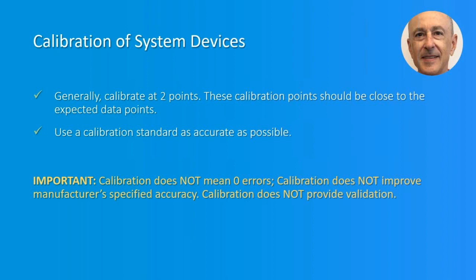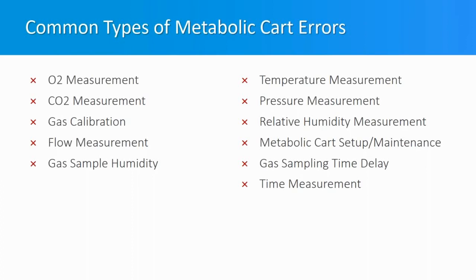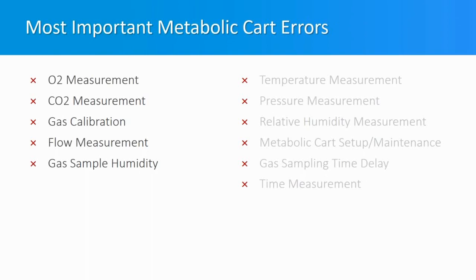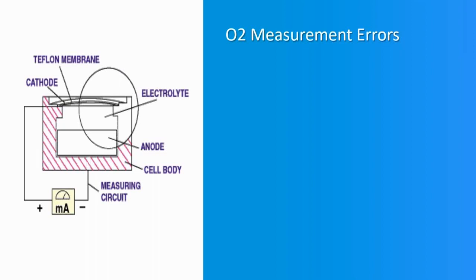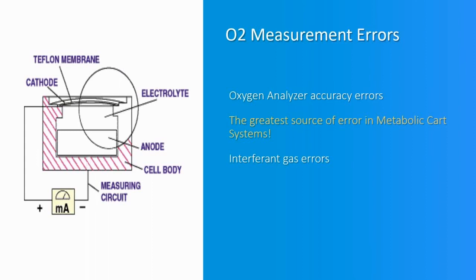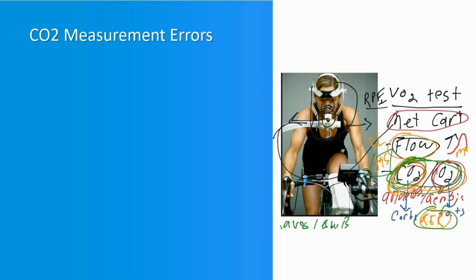Each of these physical measurements and other factors has an error associated with it, and there are quite a few potential errors. The oxygen analyzer accuracy is the greatest source of error in metabolic cart systems. All gas analyzers are affected by interferent gases — unknown or unexpected gases in the ambient air — which will produce an unwanted response from the oxygen analyzer. Having a room with fresh outside air will minimize this problem.